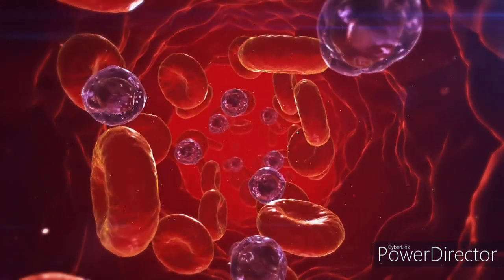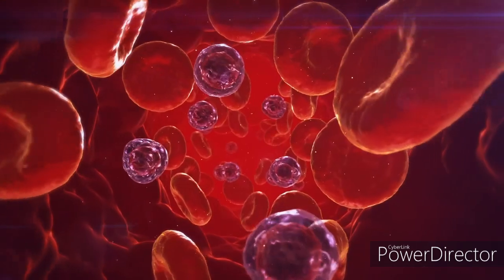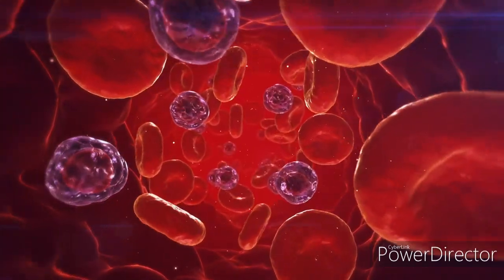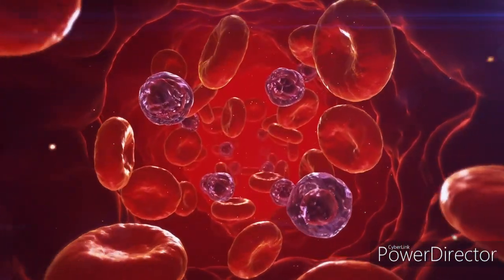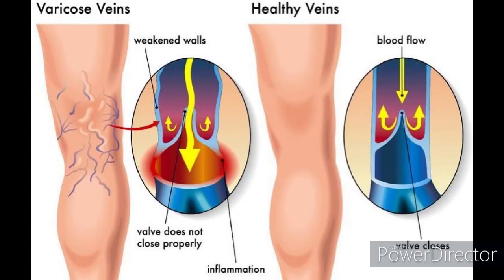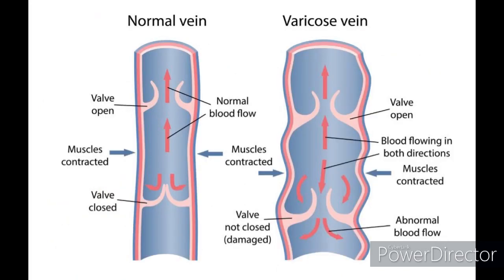Our circulatory system relies on veins to transport blood back to the heart. Veins have valves that prevent blood from flowing backwards. However, in the case of varicose veins, these valves become weak or damaged, resulting in the pooling of blood and the enlargement of veins.